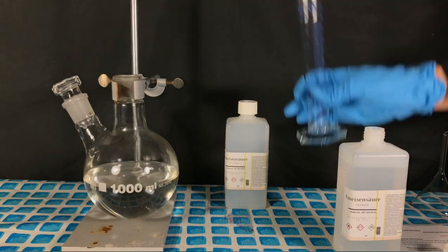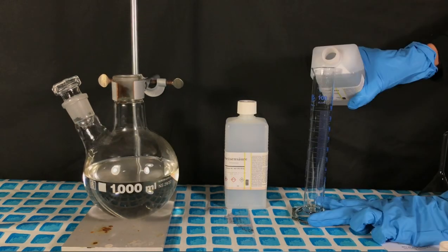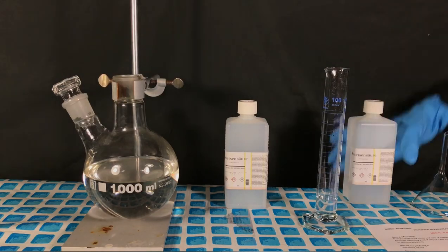The 616 ml of 75% formic acid were measured out first, then transferred to this 1 liter, 2 neck, round bottom flask.